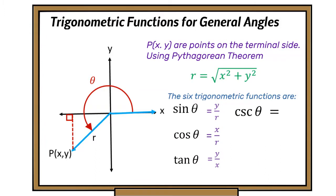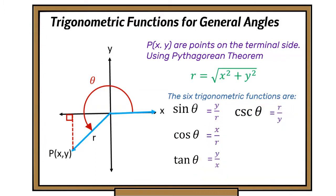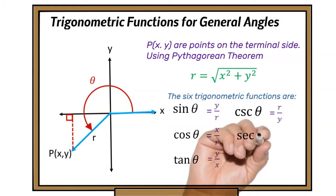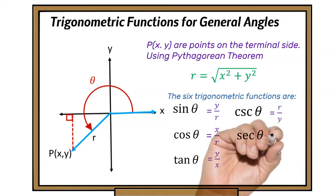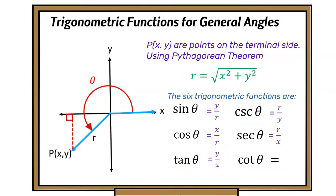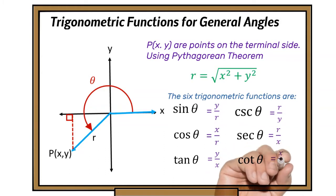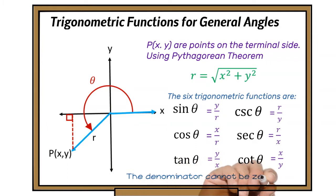The cosecant of theta is the reciprocal of sine, so it's r over y. The secant is the reciprocal of cosine, so that's r over x. The cotangent is the reciprocal of tangent, so that's x over y. The values for x and y in the denominator can never be zero, otherwise they'll be undefined values.